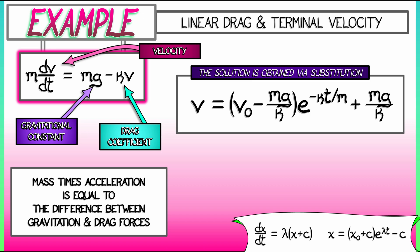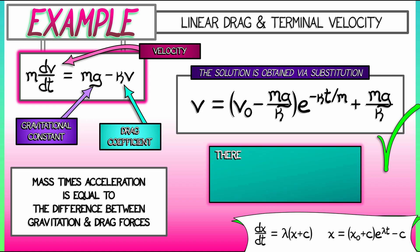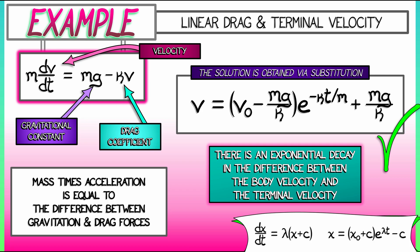Yes. Plug in t equals zero, you'll get the initial velocity. Plug in t going to infinity, and that negative exponential term goes to zero. And you're left with mg over kappa, the terminal velocity. And we can see from the solution that the difference between the body velocity and the terminal velocity is exponentially decaying in time. All right, that's one example of an affine differential equation, but here's another.